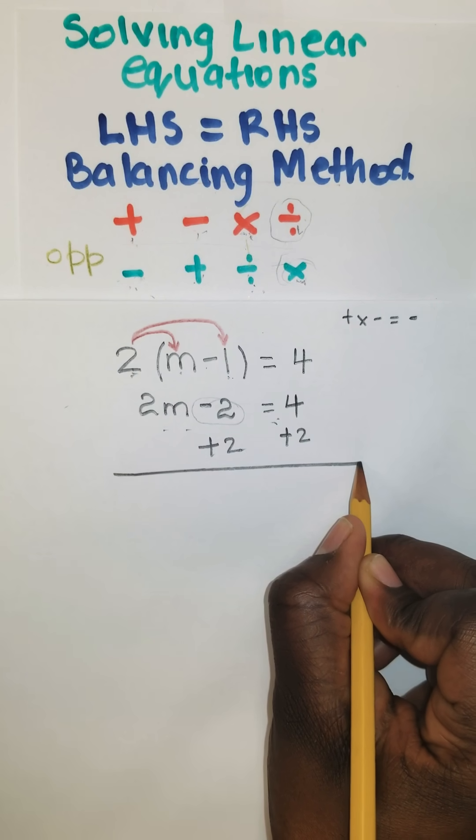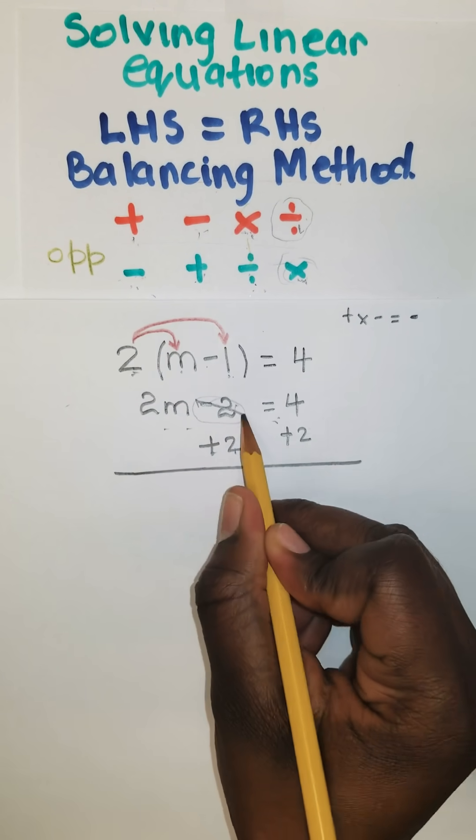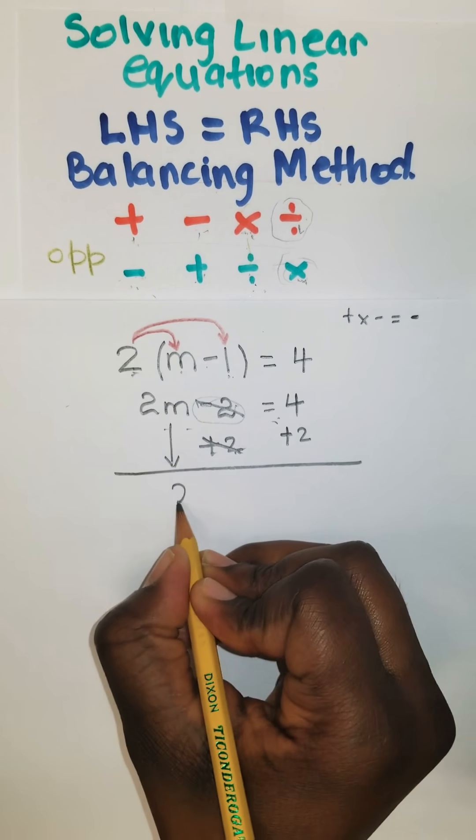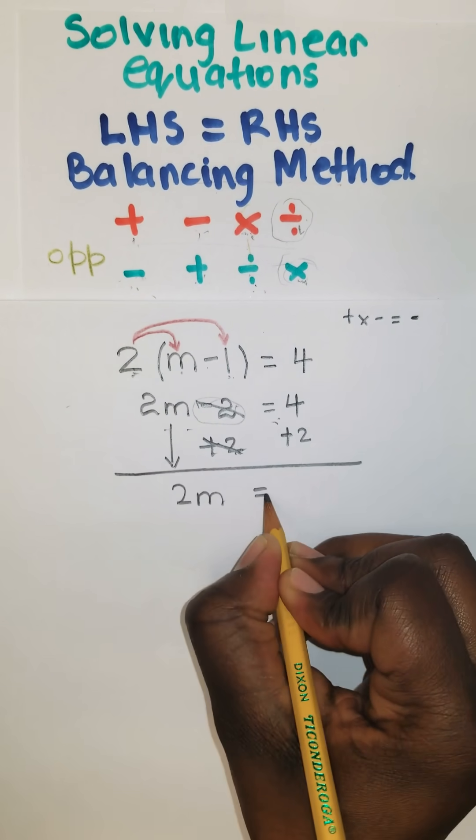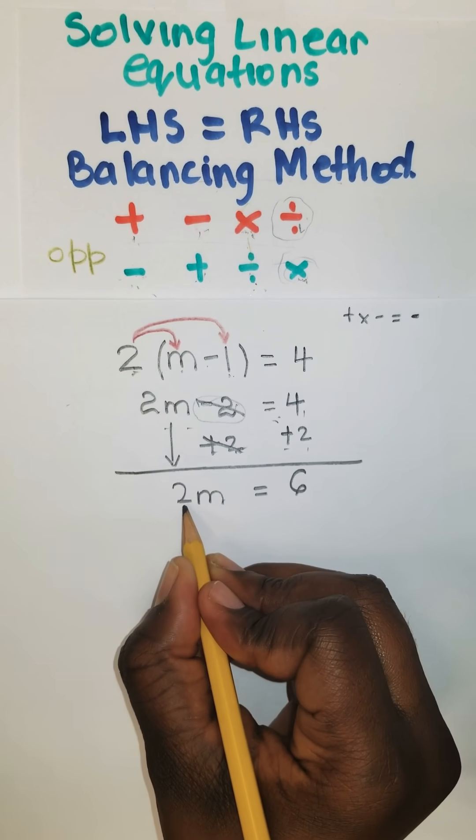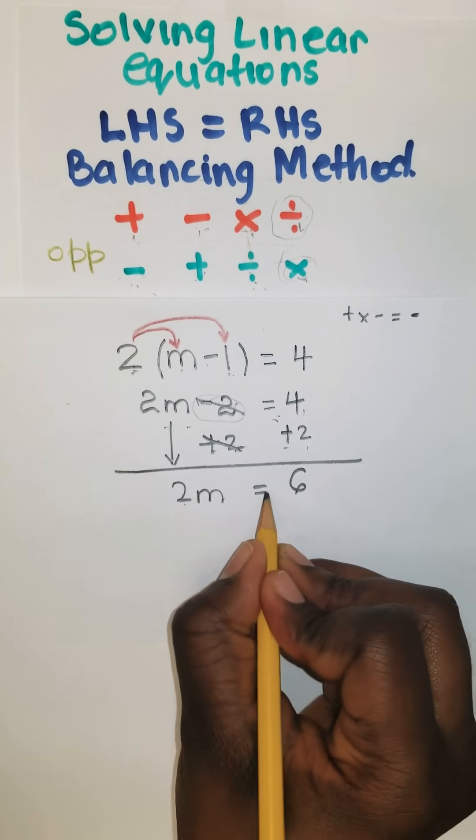We can simplify. Negative 2 plus 2 gives us zero. So these two cancel. So bring down this 2m, and it's equal to 4 plus 2 is 6. Let's go ahead.